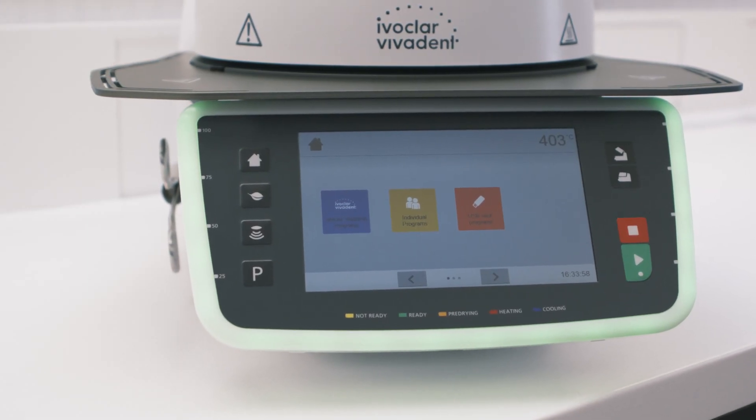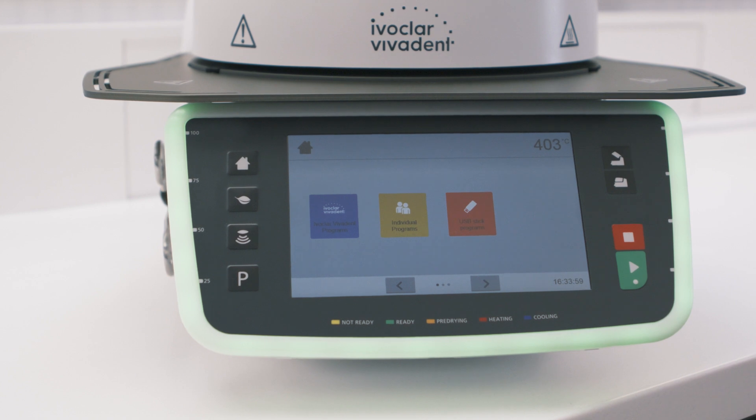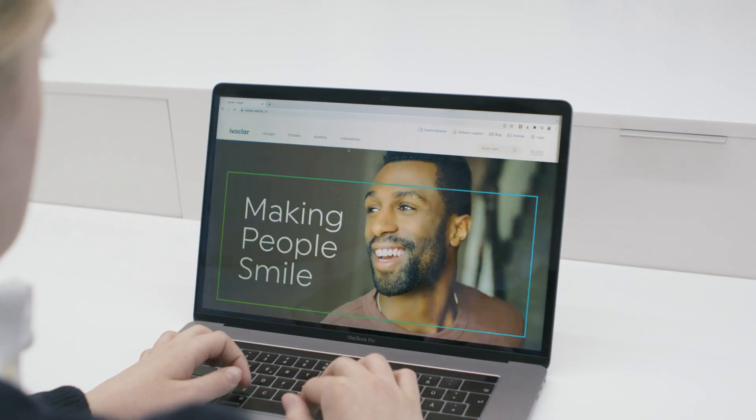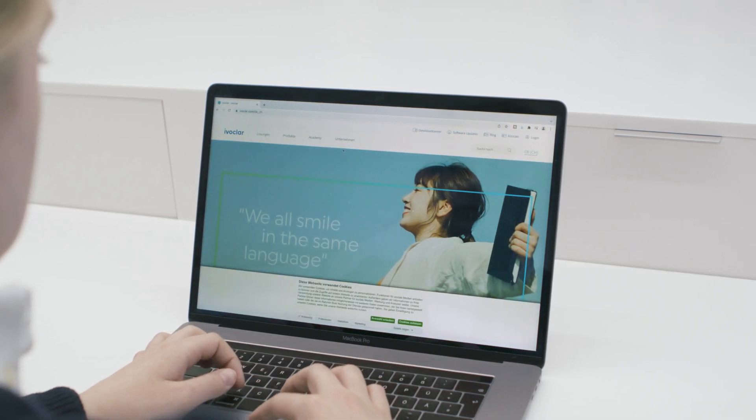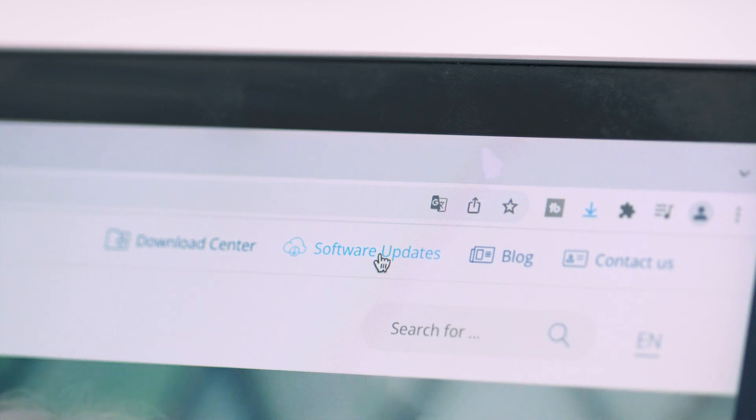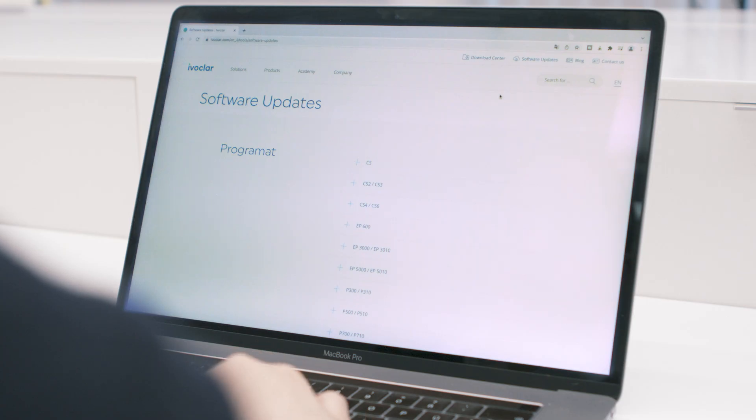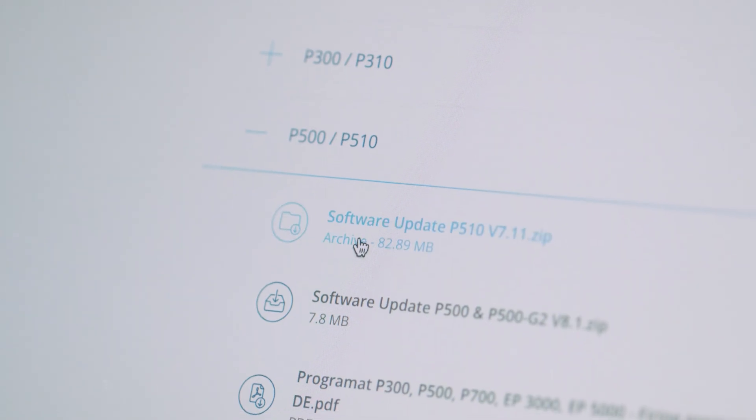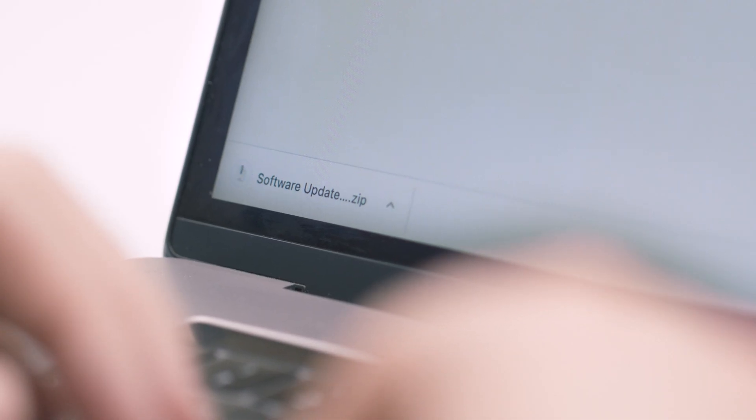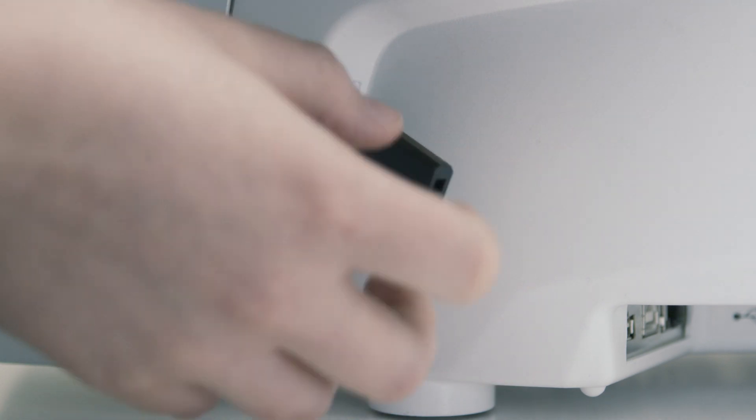It's very easy to update your software with a USB flash drive. You can download the most recent software version for your Programat from www.ivoclar.com. Save the file to a USB flash drive. Connect the USB flash drive to the Programat.